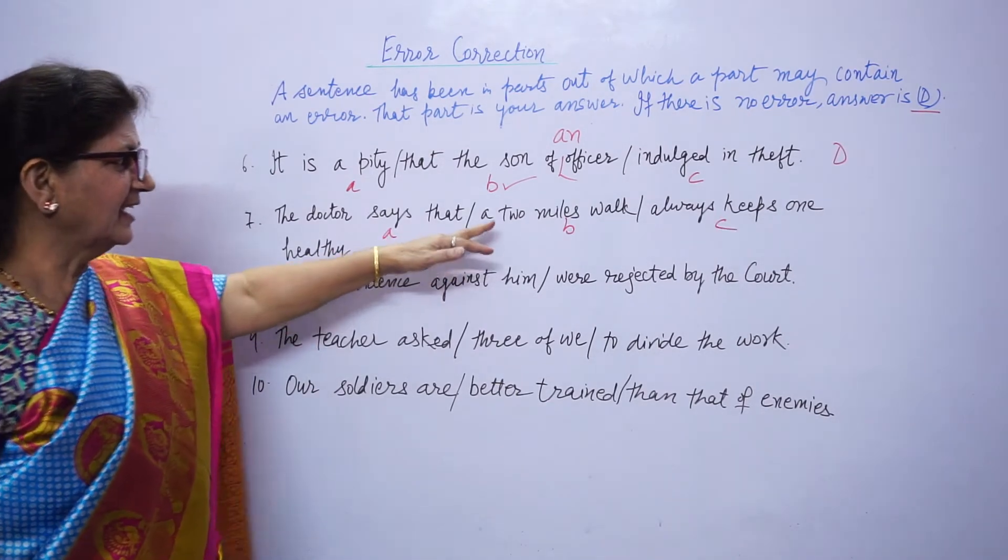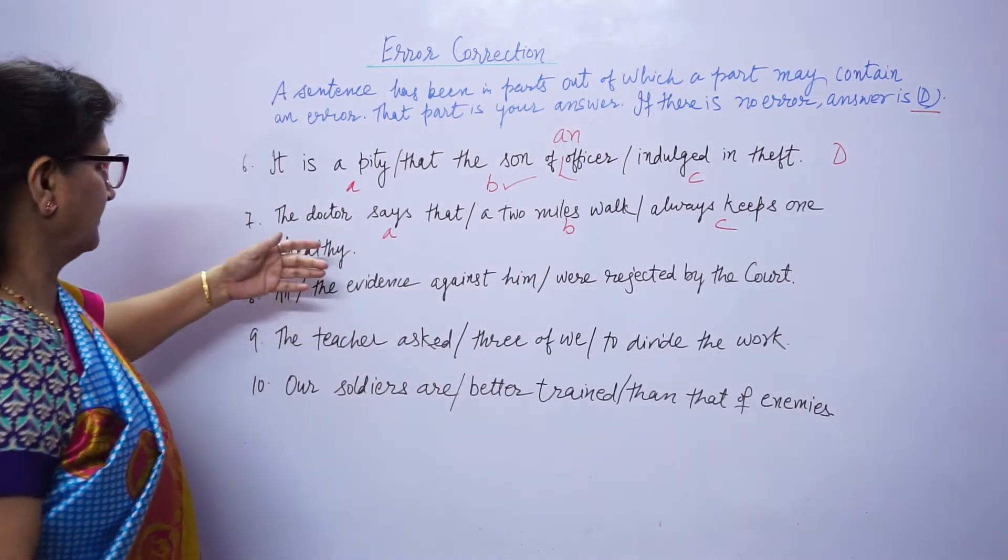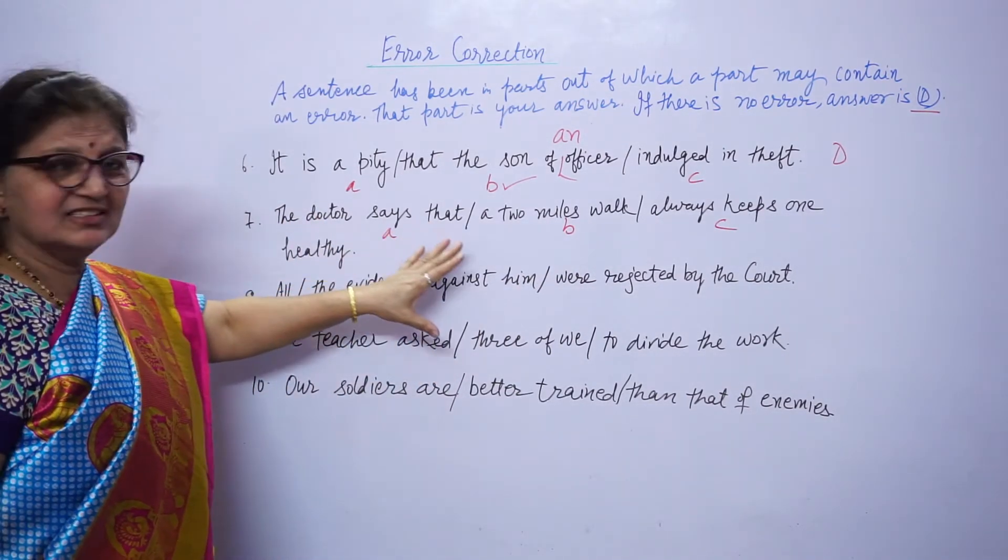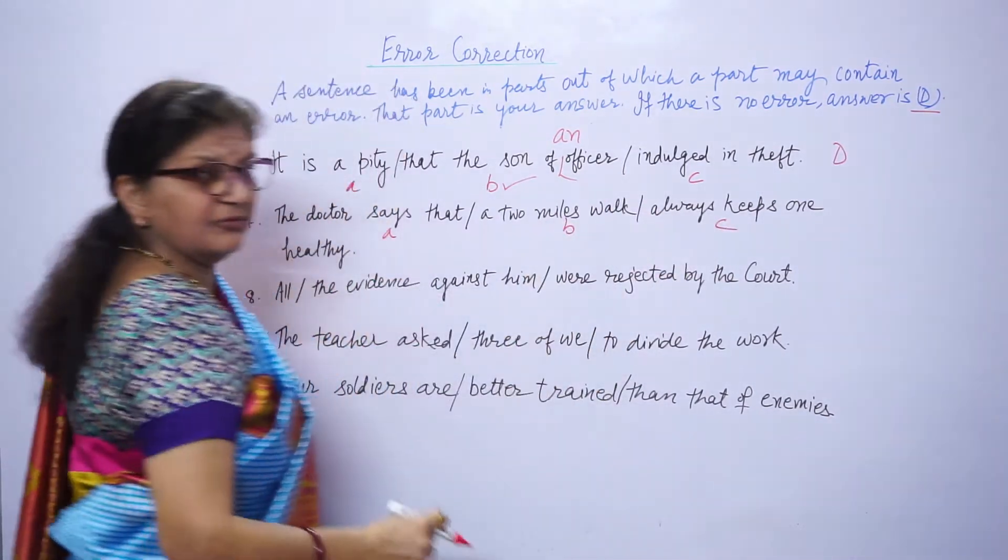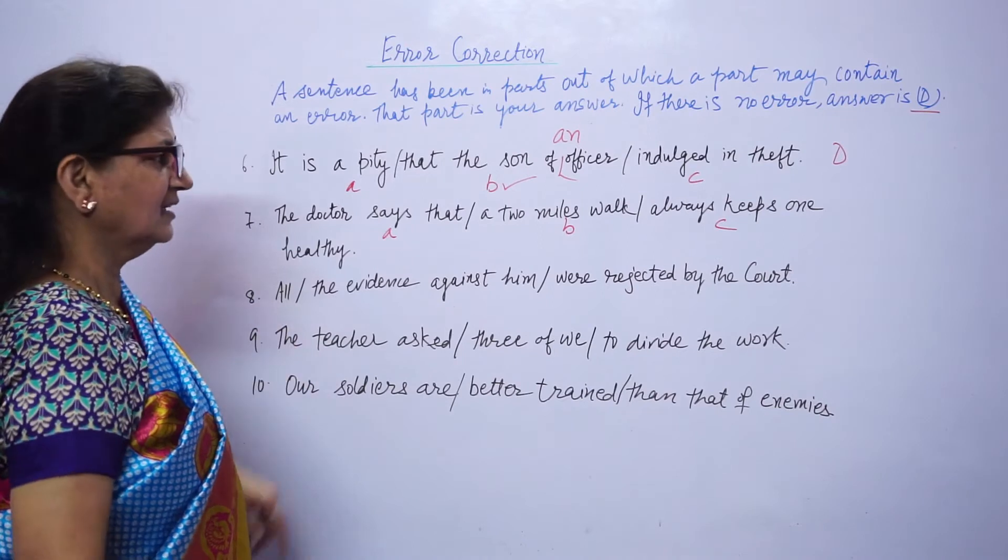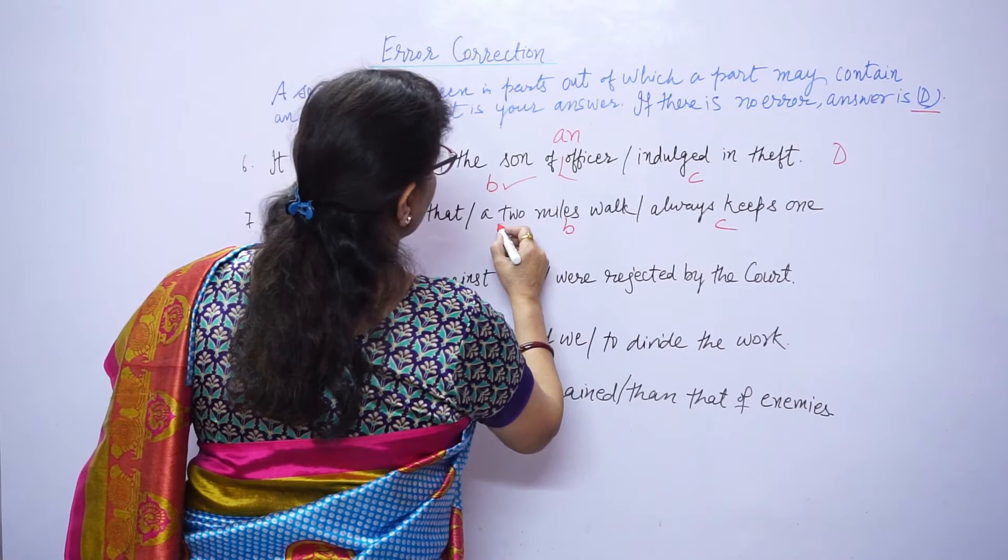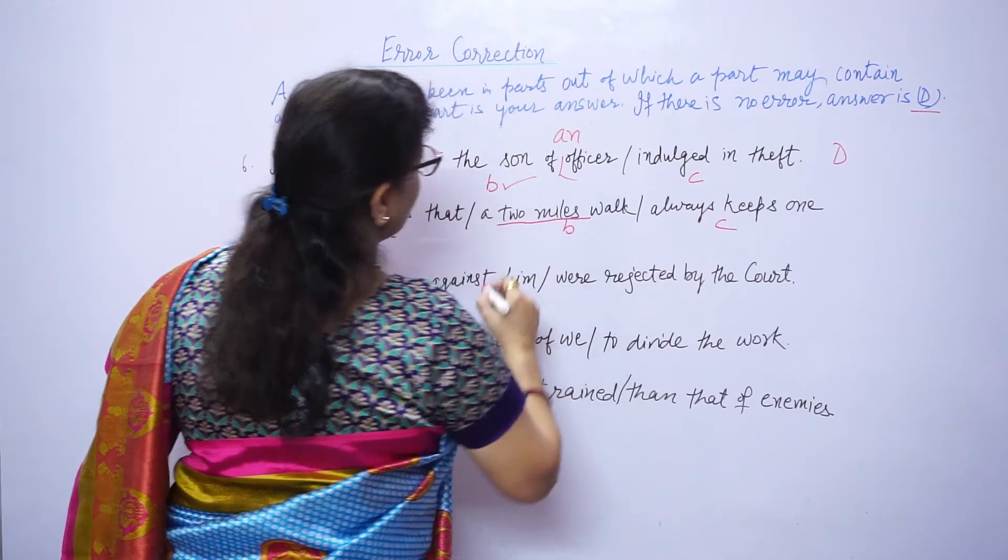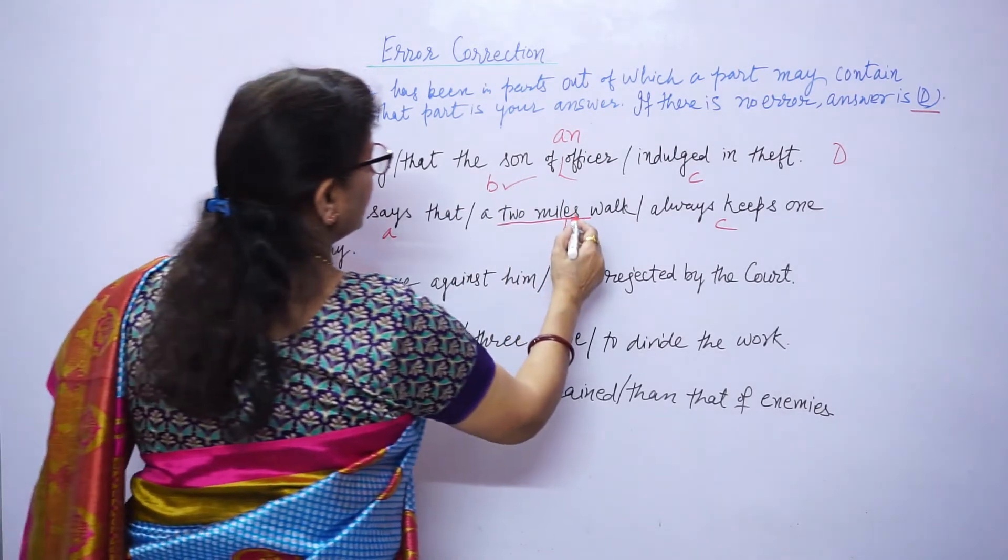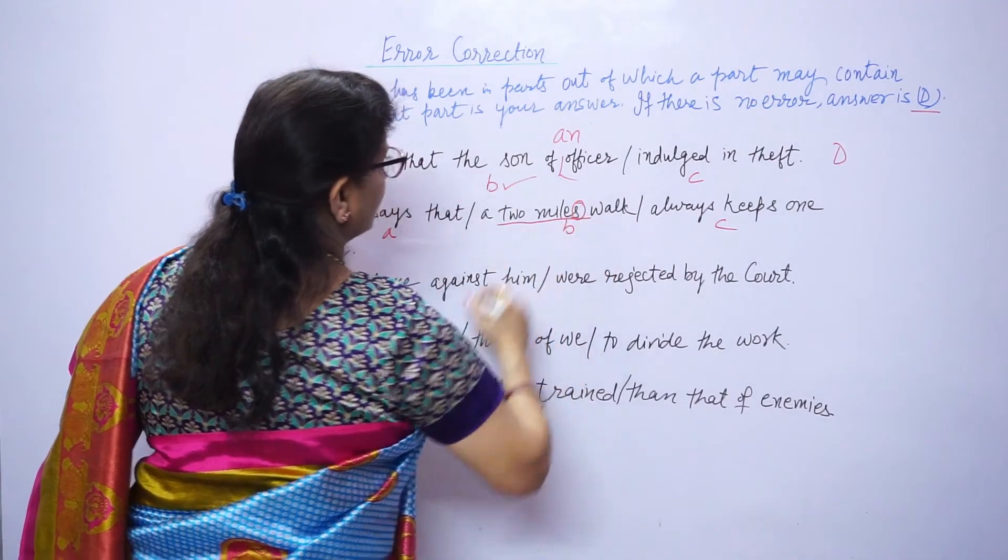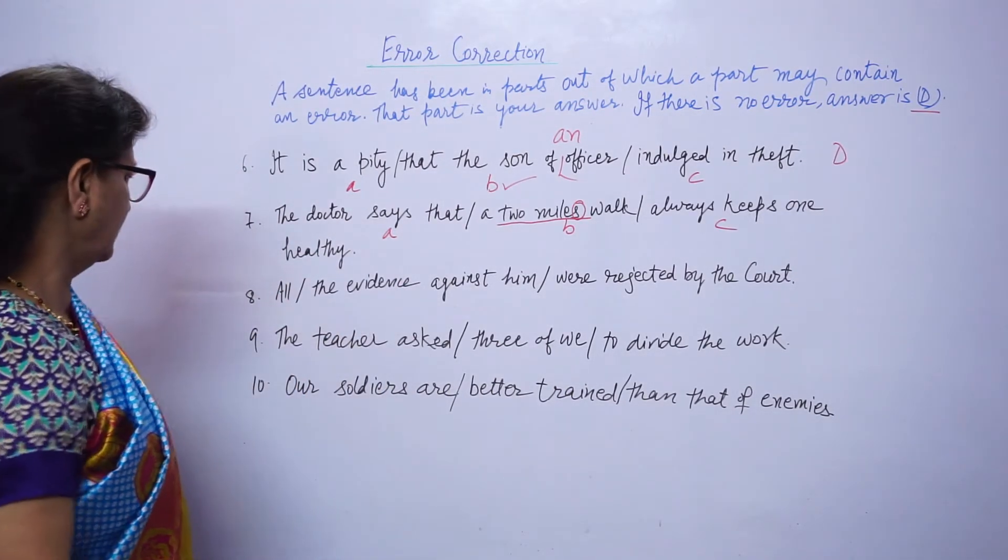The doctor says that a two miles walk always keeps one healthy. Here mistake is miles. Two miles is taken as one unit, so you don't need to say miles. Error is there, here two mile walk. That's your answer.